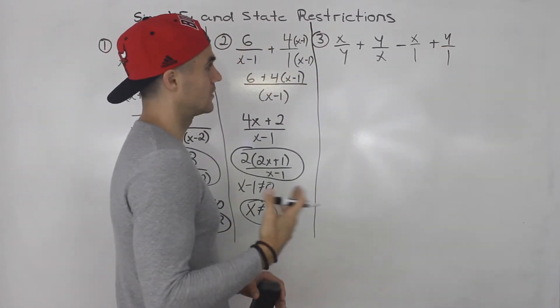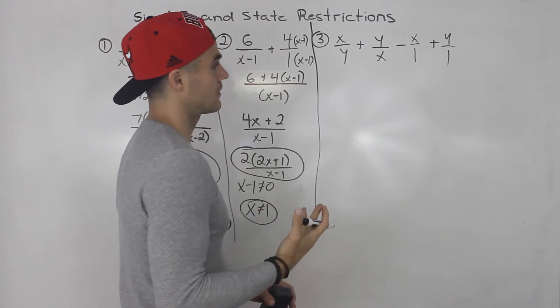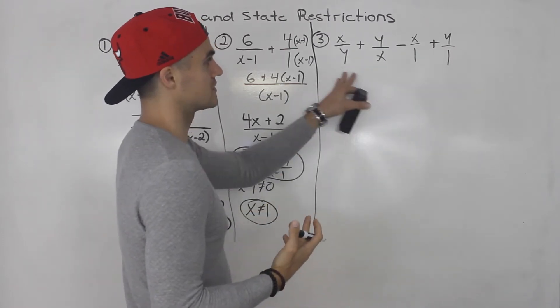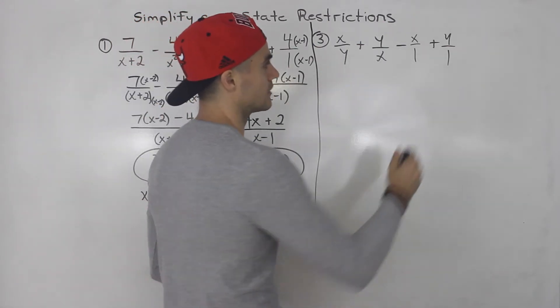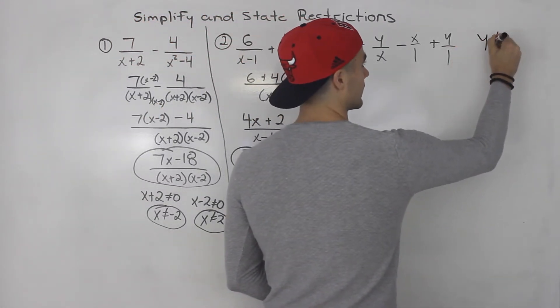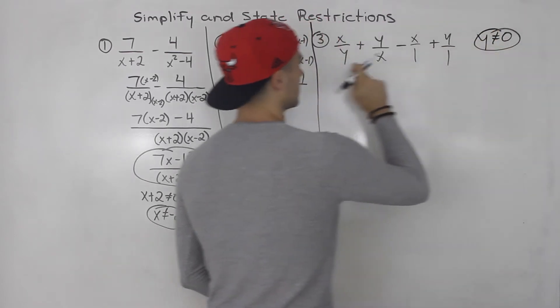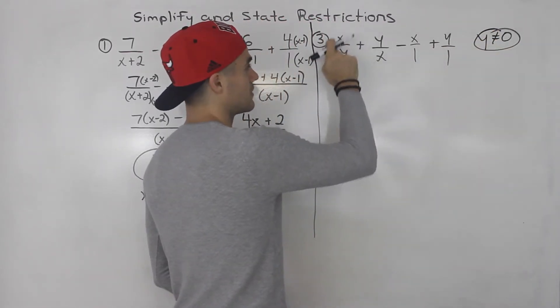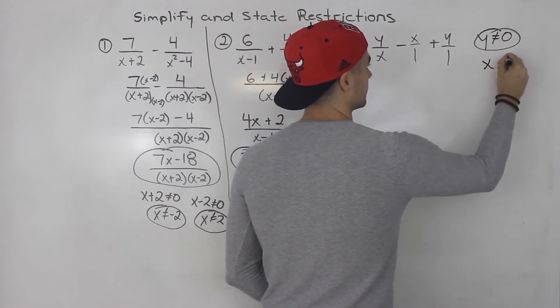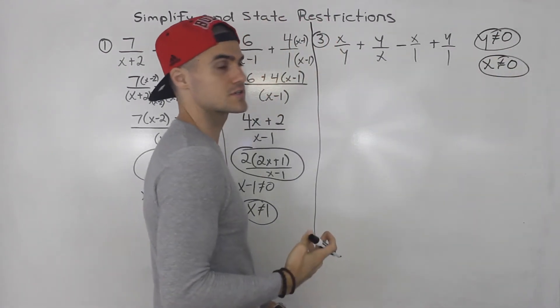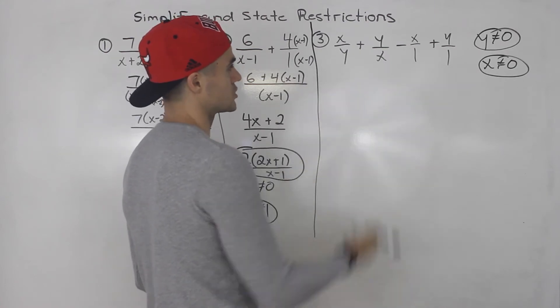First step, factor. Notice we can't factor anything here. Everything is fully simplified. Then we get the restrictions. Notice that y cannot equal 0. That's one of the restrictions, because that would make this undefined. Then here, notice x cannot equal 0. So those are the two restrictions for this question.